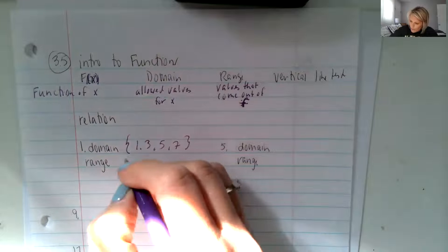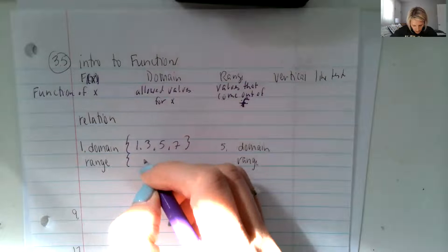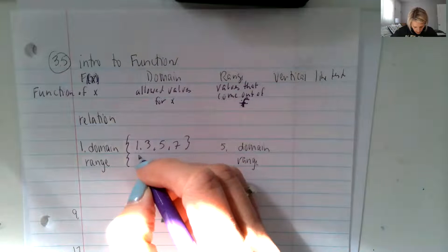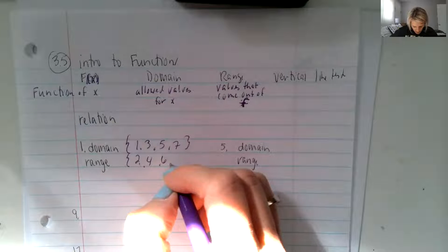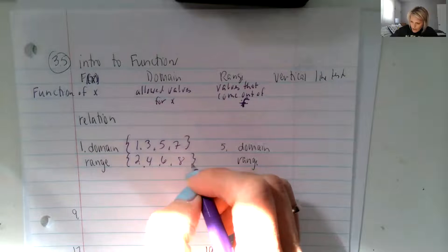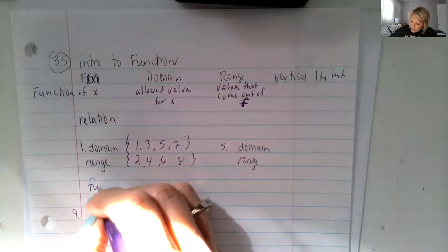And then our range are all of the values that could come out in the second coordinates. So two, four, six, and eight. And it asks if this is a function.